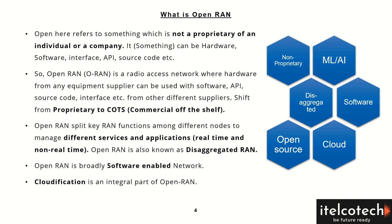There is also a shift to a disaggregated RAN, where the different functionalities are disaggregated in Open RAN. This disaggregation helps to keep some functionalities closer to the user or at the cell site — those which are real-time sensitive — while other functions that are not real-time sensitive can be moved away from the cell site and kept at the edge or at the regional level.